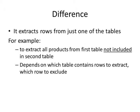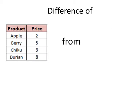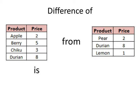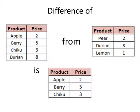The second operation is the difference, where it actually extracts the rows from just one of the tables. This is a little bit tricky to understand, so let's take a look at one example. If we perform a difference operation on these two tables, notice that what we'll get is the answer on the bottom table. When we perform the difference operator, we are looking at the items that are in the first table...